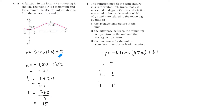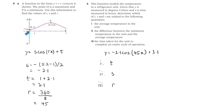t is the vertical shift. If the low point is 1 and the high point is 5.2, then the centre line is going to be 1 plus 2.1, which is 3.1. So t equals 3.1 — that's where the centre line of this function is.